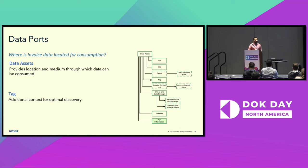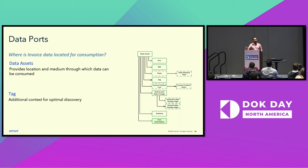Where is invoice data located for consumption? Invoice data could be a data lake table or a Kafka topic, and that is where data ports come into play. A data product could have more than one data port, or data assets as we call them. A data asset has information about what type it is — whether a Hive table, Kafka topic, Redshift table, or any other supported type — and what is the location to consume from. At the data asset level, a data steward can also add additional tags for optimal discovery, such as the business domain it comes from and the analytical domain it targets.